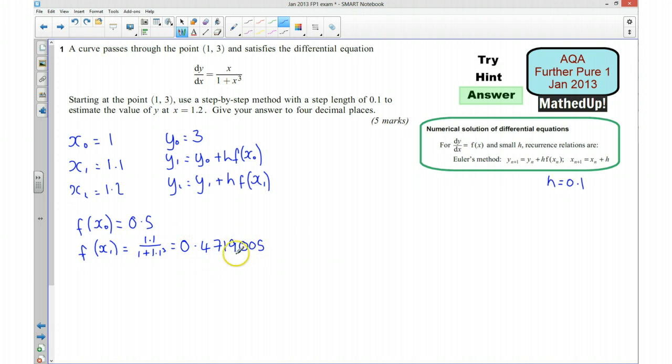Okay, and I'm just writing down more decimal places than I need, because I want my answer to four decimal places. Okay, so I'm now going to use this information here, and I can plug in my values into the formula over here. So for y1, I need y0, which is 3, plus h, which is 0.1, times by this function here, which is 0.5. And that gives me 3.05.